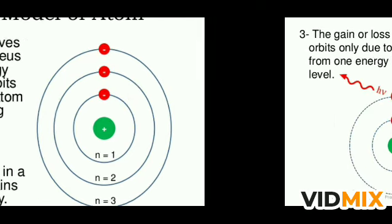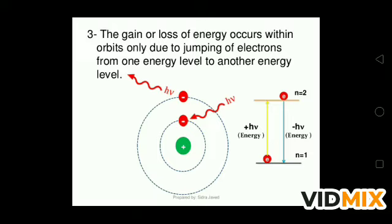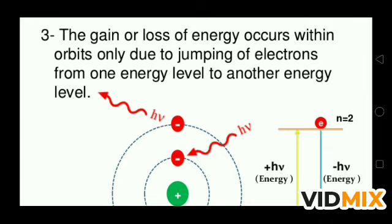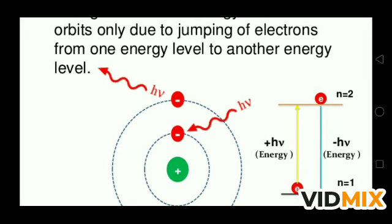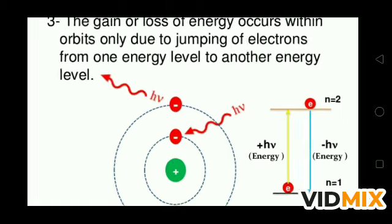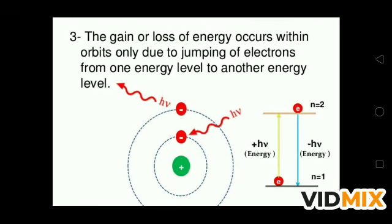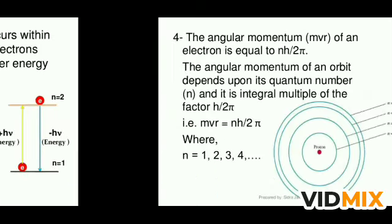The gain or loss of energy occurs only when electrons jump from one energy level to another. When an electron jumps from a higher orbit n₂ to a lower orbit n₁, it radiates energy (−hν). When it jumps from n₁ to n₂, it gains energy (+hν). Here n is the principal quantum number representing the shell number. An electron jumping from a lower to higher level absorbs energy, and from a higher to lower level it radiates energy.